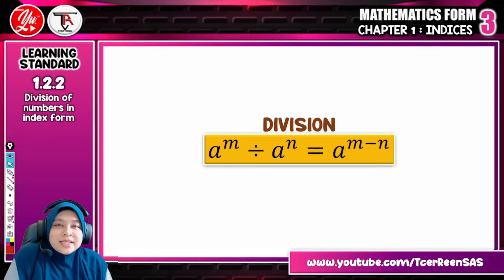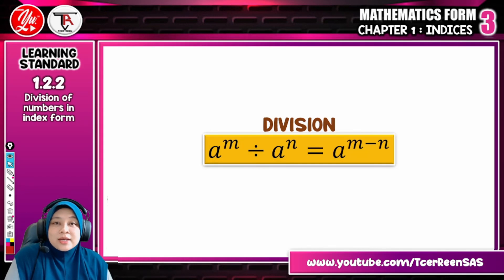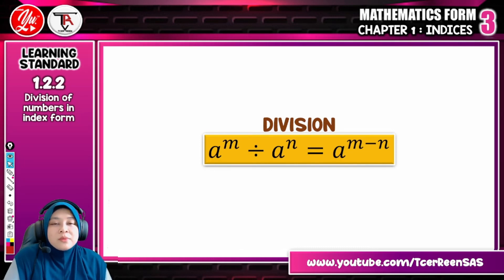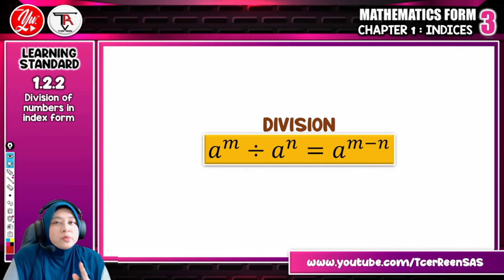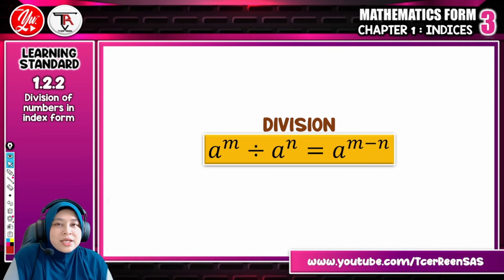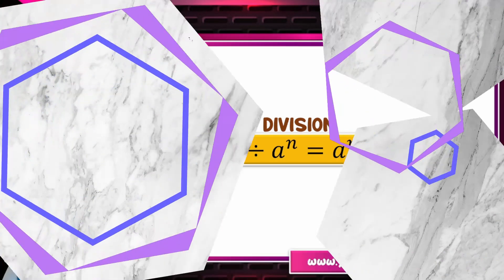That is the second Law of Indices, which is division of numbers in index form. I hope that you can understand how to combine multiplication and division of numbers in index form. We will meet again for the next Law of Indices, which is power to the power. See you in the next video. Assalamualaikum. Bye-bye.